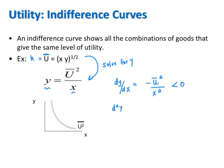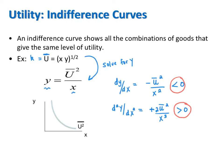To determine the curvature of the indifference curve, we evaluate the sign of the second derivative. The second derivative of y with respect to x is a positive u-bar squared times 2 over x cubed. What's important is that this is positive. To evaluate the sign of the second derivative, you also have to consider the sign of the first. Because the first derivative is negative and the second derivative is positive, or because the signs don't match, the rate at which the curve slopes down is decreasing. We know from the negative sign of the first derivative that the indifference curve is downward sloping at a decreasing rate.